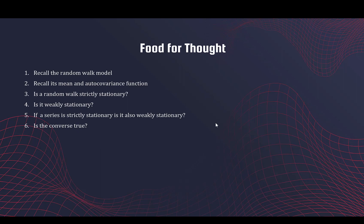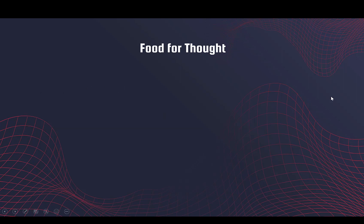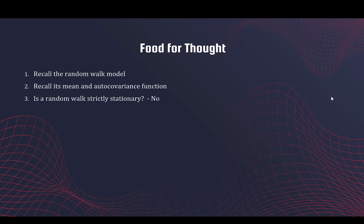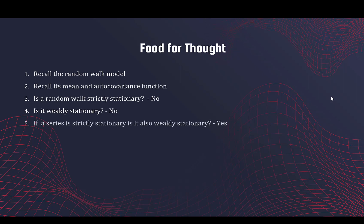Here are some practice questions — pause the video and think about them. The random walk is not strictly stationary because its mean depends on time. Because the mean function depends on time, it cannot be weakly stationary either. If a series is strictly stationary it is definitely weakly stationary, because the mean function is constant and the covariance depends only on lag. The converse is not true.